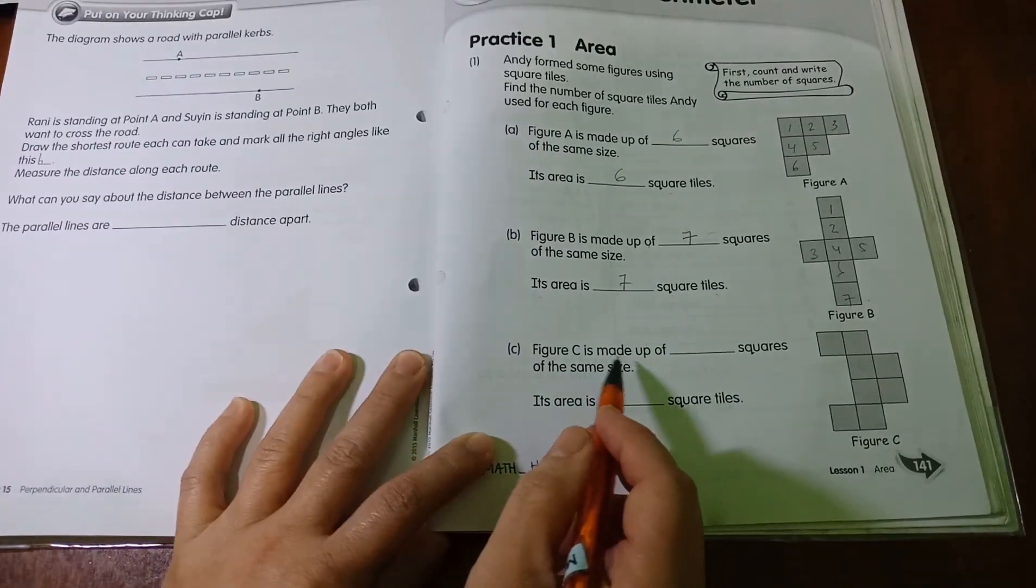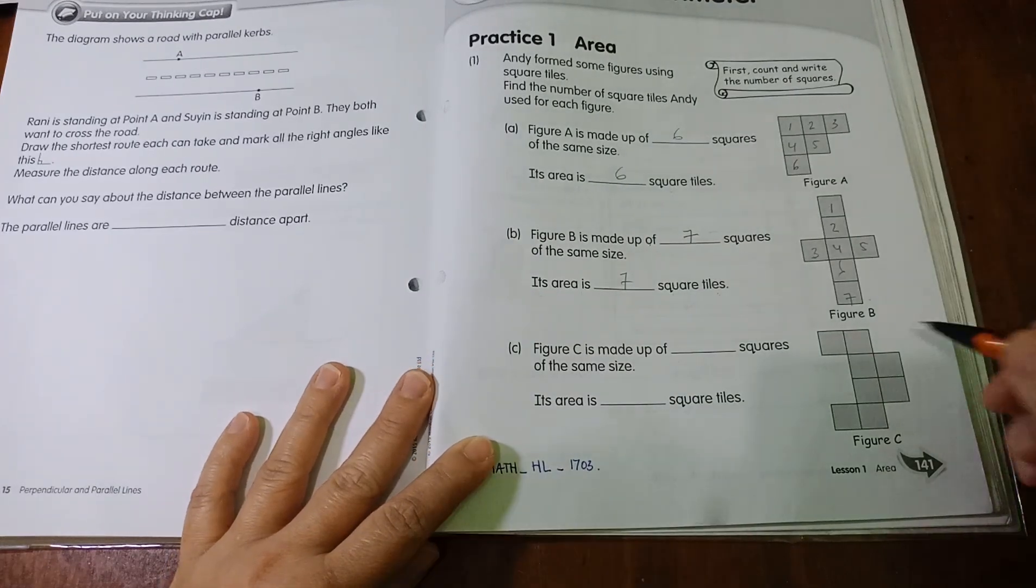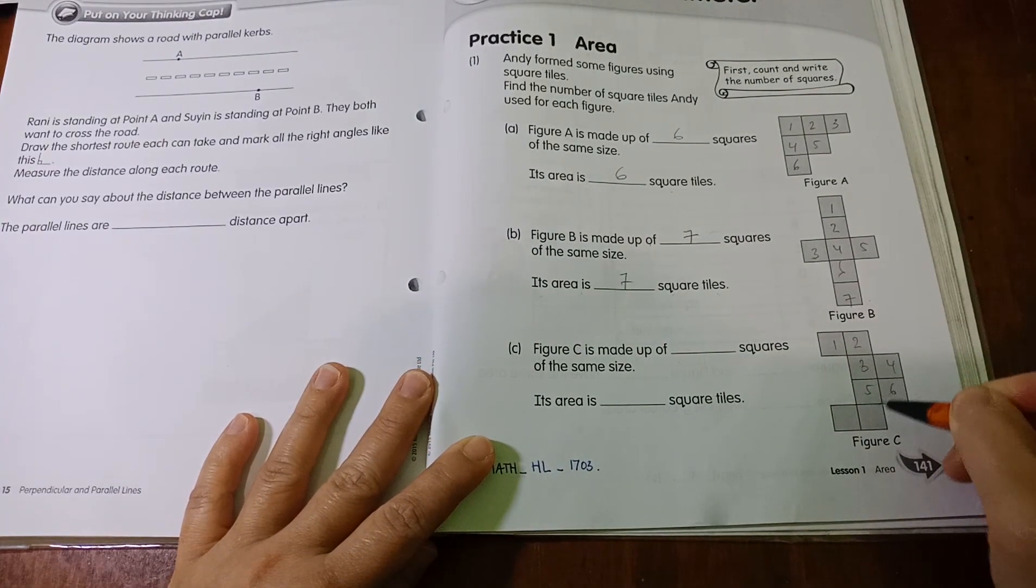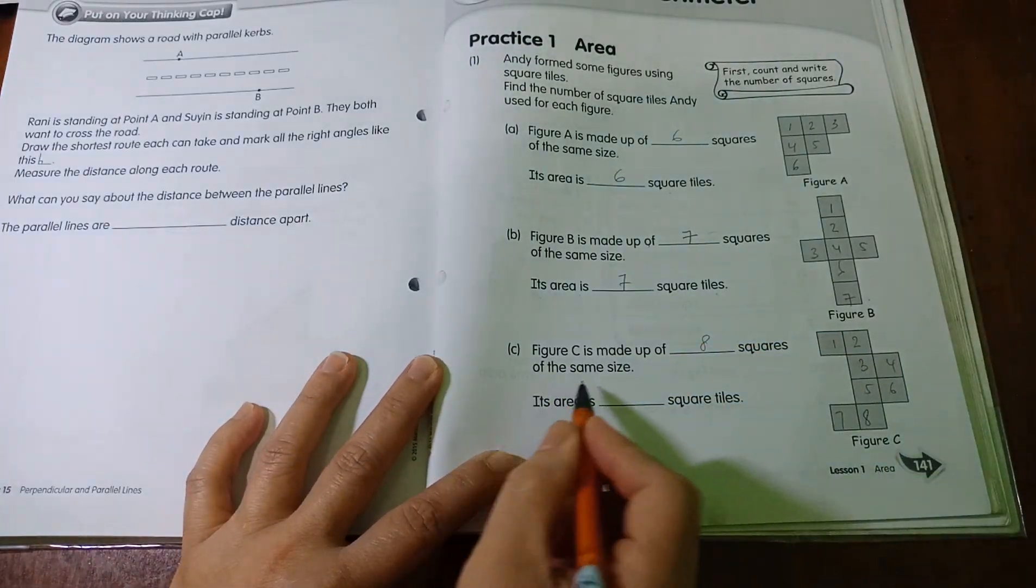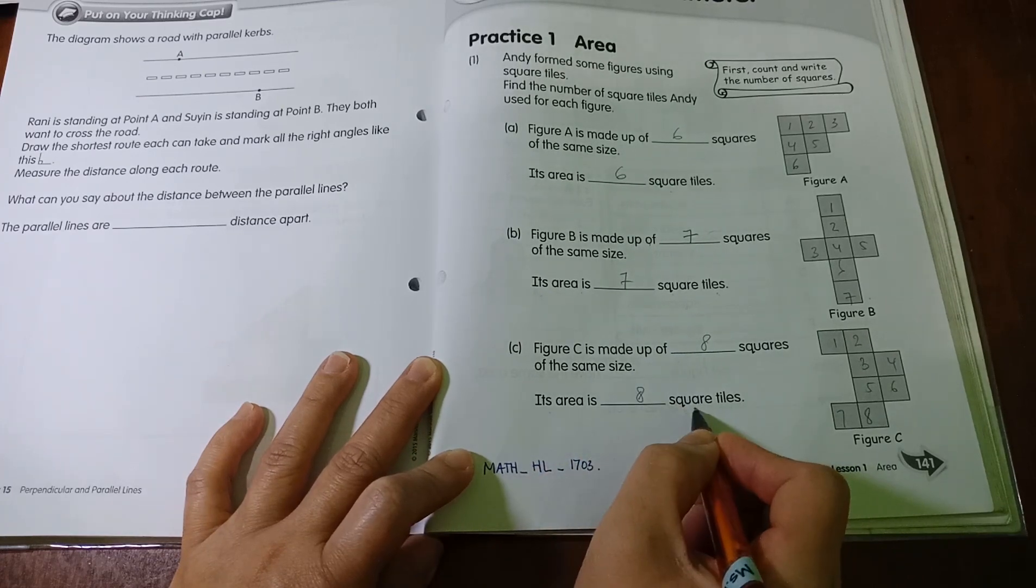Now, figure C, let's see, figure C is made up of, how many squares are there? Let's count it. 1, 2, 3, 4, 5, 6, 7, 8, so there are 8 squares of the same size. Its area is 8 square tiles.